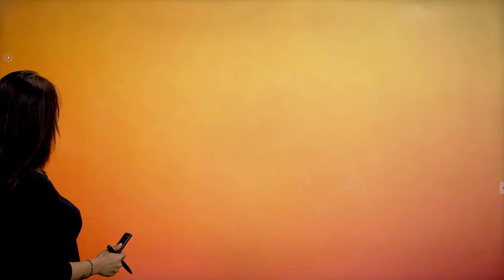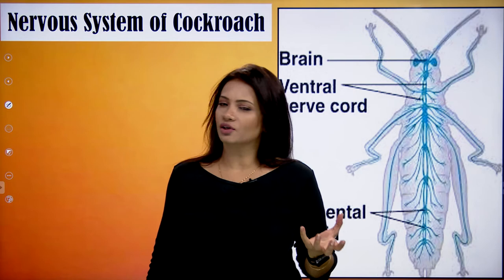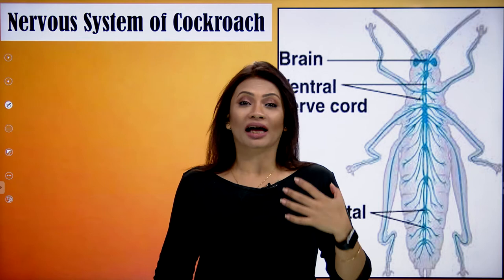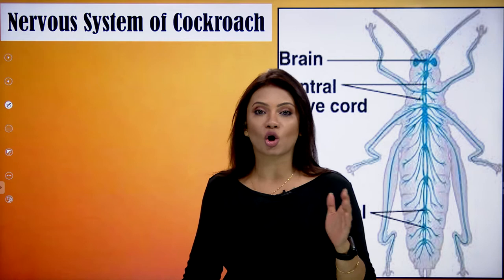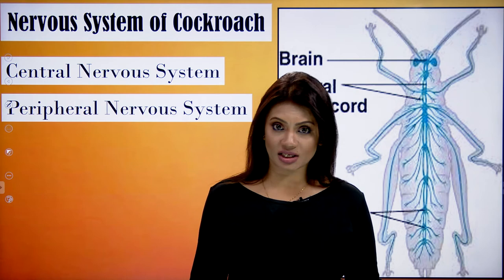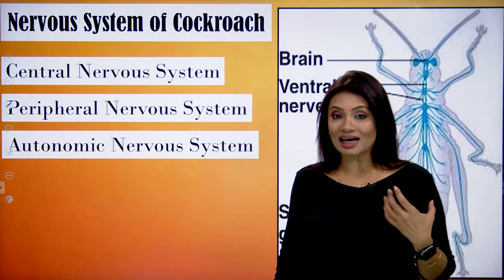Today's lecture is about the nervous system of the cockroach. Although the cockroach is a tiny insect, its nervous system is quite advanced. Just like mammals, the cockroaches have their nervous system divided into different parts: first there is a central nervous system, then the peripheral nervous system, and lastly, to take care of all the involuntary activities, they too have an autonomic nervous system.